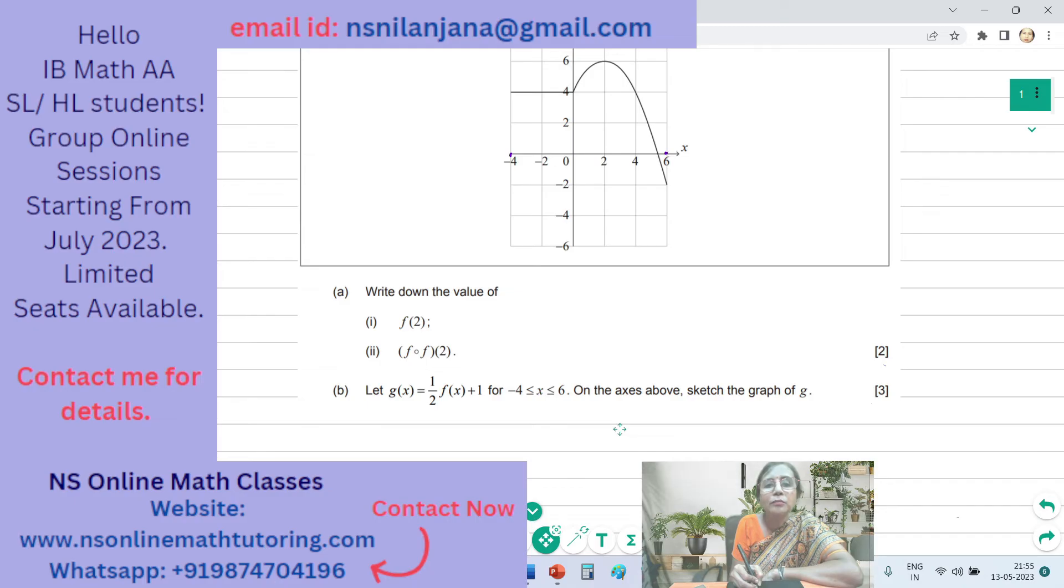So first, F of 2. 2 is the X value, so this is X equal to 2. What is F of 2? The corresponding Y coordinate is 6. So F of 2 is equal to 6.